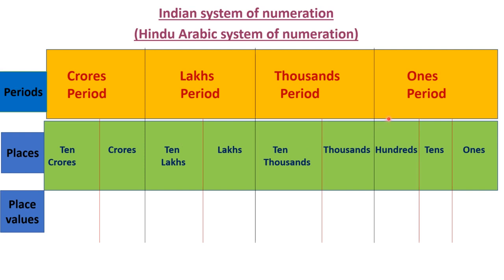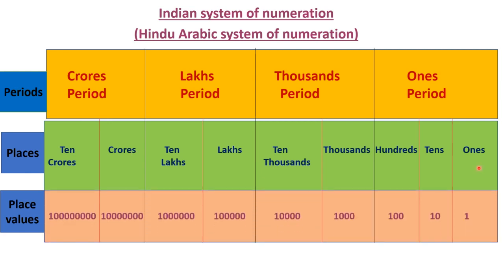So the periods are: ones period with three places, thousands period with two places, lakhs period with two places, and crores period with two places. The place values are: ones, tens, hundreds, thousands, ten-thousands, and so on up to ten crores. This is the Indian place value chart.